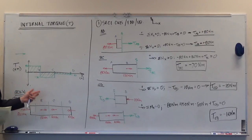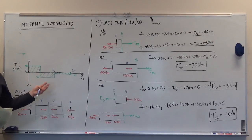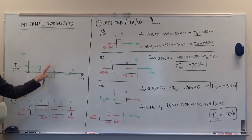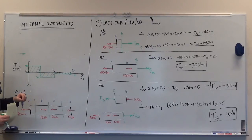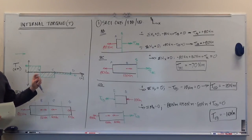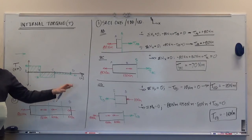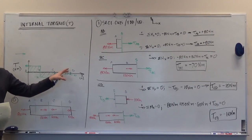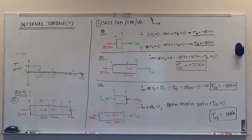This internal torque diagram is the first step for any shear stress calculation or angle of twist calculation for a torsional shaft. Fundamentally this is all statics, so it should be review, but we see a lot of problems at just this basic step. It's an important first step to be able to do in your sleep.